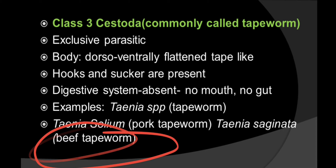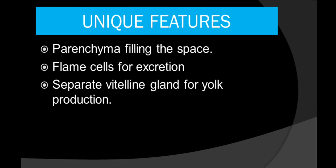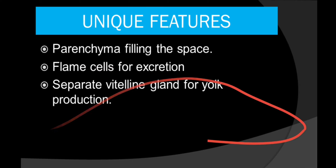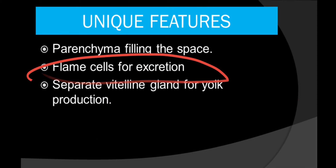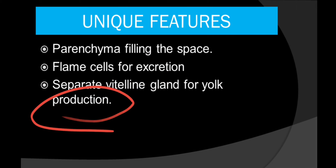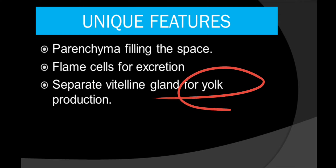The three important classes of phylum Platyhelminthes are Turbellaria, Cestoda, and Trematoda. The unique features of this phylum are: parenchyma cells filling the space, flame cells for excretion, and a separate vitelline gland for yolk production — because the ovary which produces eggs does not generate yolk.